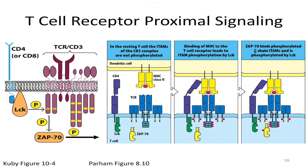Once we have phosphorylated ITAMs, a new protein called ZAP-70 can bind. ZAP-70 is also a kinase, and it comes to this location — it couldn't bind before because there was no binding site. ZAP-70 then starts phosphorylating things, including phosphorylating itself. You can see this in figure 8-10 of the textbook.